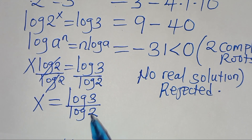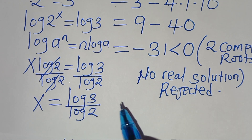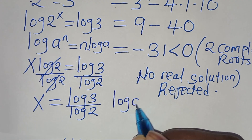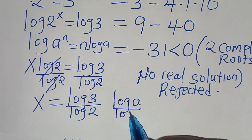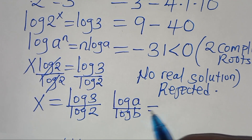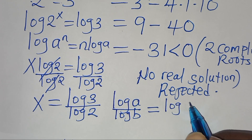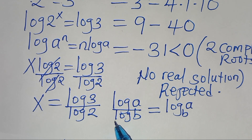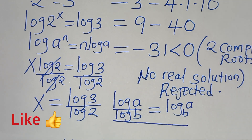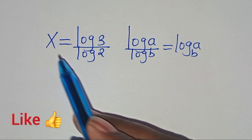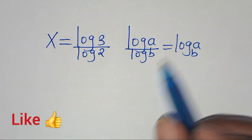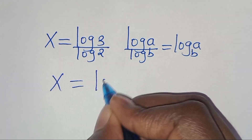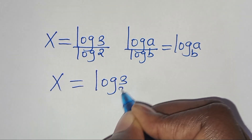We recognize that log 3 over log 2 is in the form of log a over log b, which we can express as log a to base b. Applying this logarithm property, we have x equal to log 3 to base 2. This is the value of x.